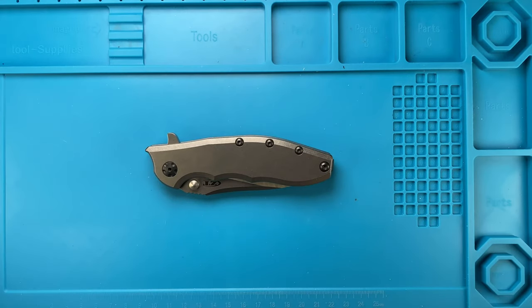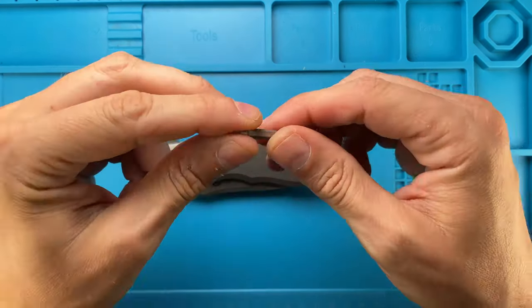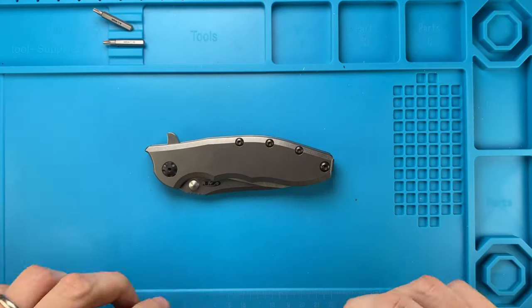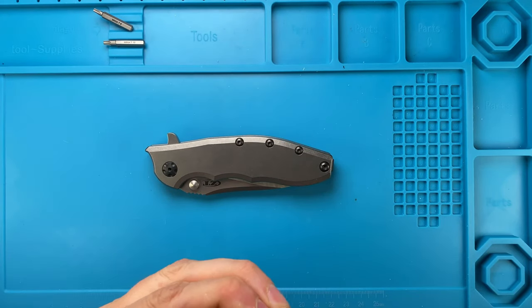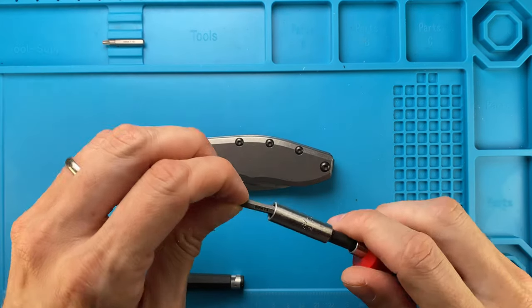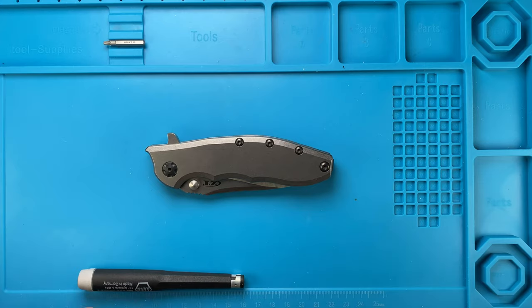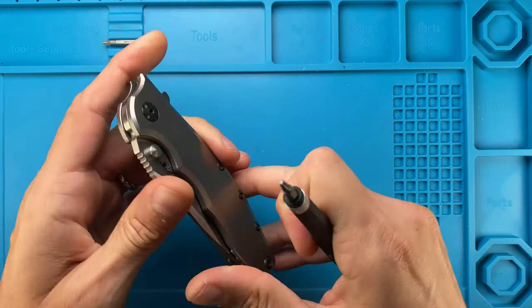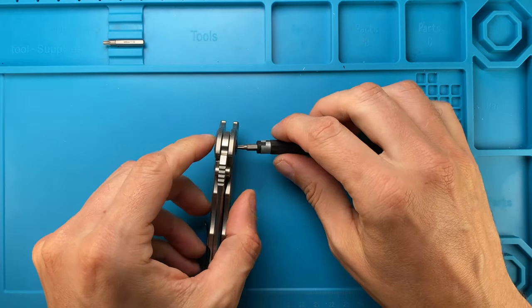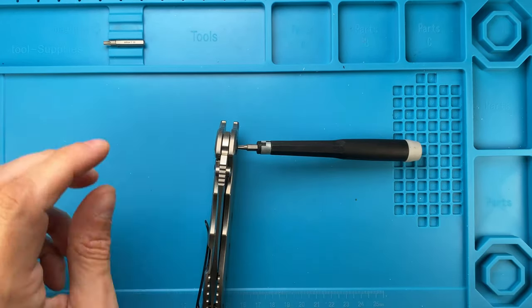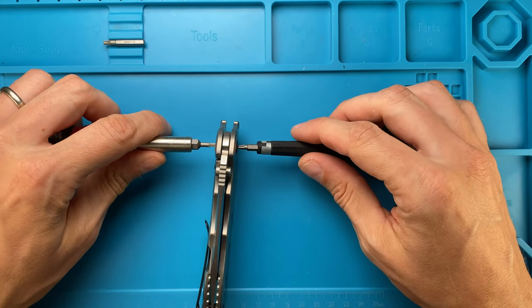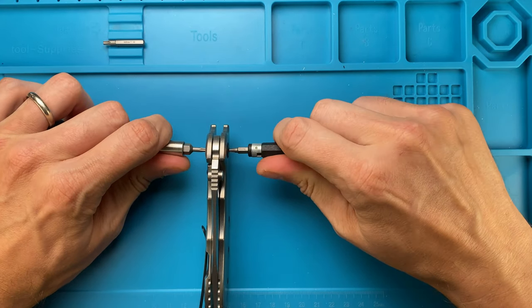For this operation we're going to need a T10 and a T8, a couple of bit drivers and some other tools. Let's start with the T8 and let's start unscrewing the pivot. As you can see this is a spinning pivot, which means you're going to need another T8 driver just to keep that in place, and then you can just unscrew.